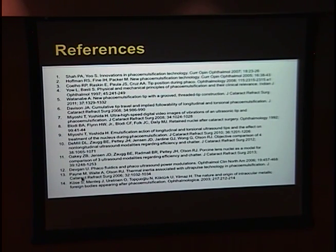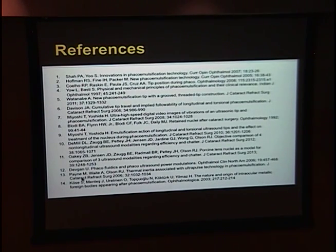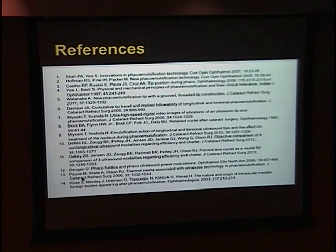Two things to point out: the lens fragments are a fairly consistent size — two millimeters on the side — which is part of the reason we can get good, hard objective data. The other point is that when we say they're human equivalent, they're equivalent to lenses taken out from extracapsular surgery in Africa, so these are 3++, 4++, and harder — on the limit of what's hardest.